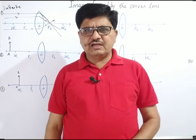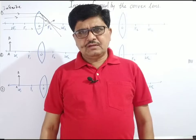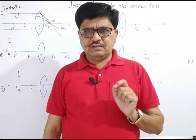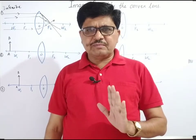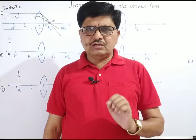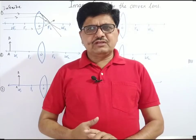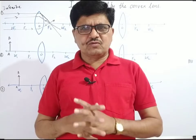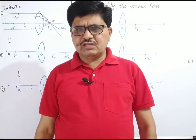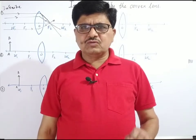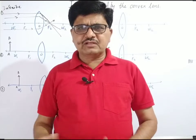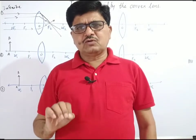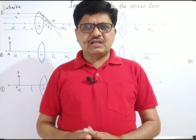How many rays are necessary to draw the ray diagram of the image of any object? Three rays are necessary, but these three rays are originated from any point of the object. In practice, two rays will be sufficient to draw the ray diagram. Where these three refracted rays meet together, from this intersecting point toward the principal axis within the perpendicular distance, the image of the object is formed.